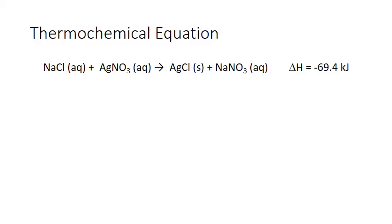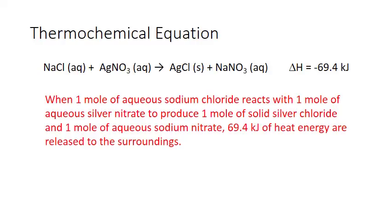Another way of interpreting this equation — putting this into words — is that when one mole of aqueous sodium chloride reacts with one mole of aqueous silver nitrate to produce one mole of solid silver chloride and one mole of aqueous sodium nitrate, then 69.4 kilojoules of heat energy are released to the surroundings. This assumed relationship between the kilojoules of energy released and the moles represented by the coefficients on the balanced chemical equation means the one simply comes from the coefficients associated with each of those substances.